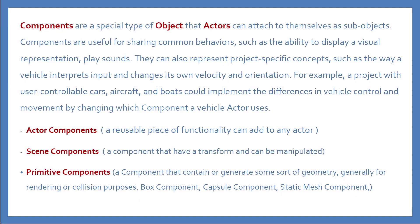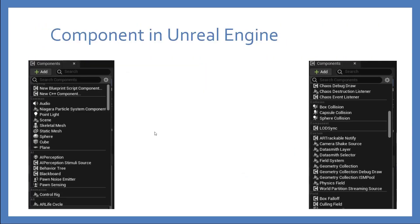The three main components we will use are: actor component, which is a reusable piece of functionality that can be added to any actor; scene component, which handles all transformations that can be manipulated; and primitive component, which can be rendered and handle collision. These are all components the Epic guys provide, already built for you.